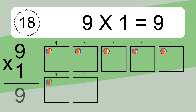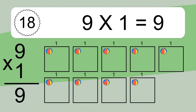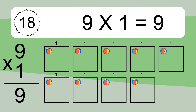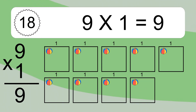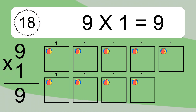9 times 1 equals what? 9 times 1 equals 9. We have 9 boxes, and each box has 1 colorful ball inside. If you count all the balls in all the boxes together, you will have 9 times 1 balls. This equals 9 balls.